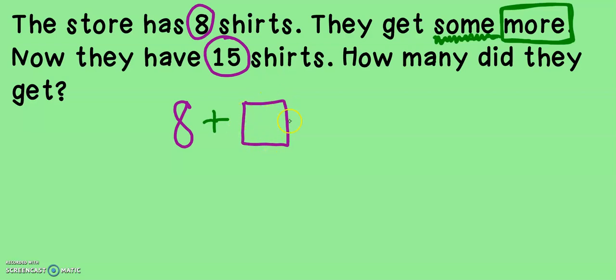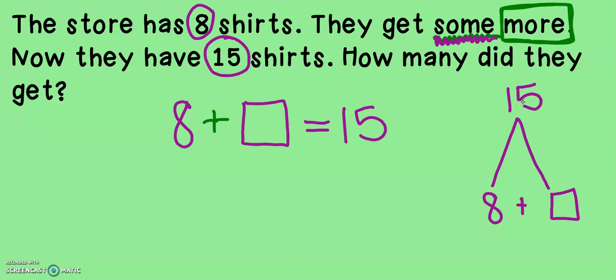Now, this mystery box says that I do not know how many more the store got yet. That's why I put it as a box. I need to figure out what number goes there. Now, they have 15 shirts. So eight plus something is equal to 15. Now, if I think about this number, if I were to put it on a math mountain, eight plus something, I know if I'm adding them, they are my add-ins, equals 15. That means that 15 is the king of my mountain. So I can't add 15 plus eight, because 15 is the king of my math mountain. Nobody can be bigger than the king. So I need to use a strategy to figure out eight plus what gives me 15.